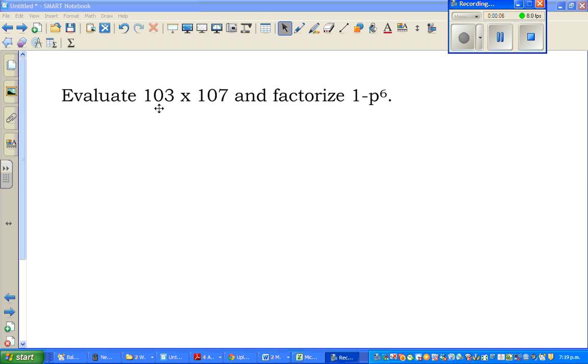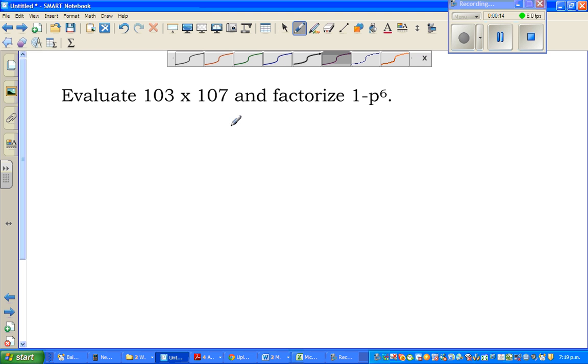Evaluate 103 times 107 and factorize 1 minus p to the power 6. Now here the question is we want to use algebra to multiply 103 times 107.